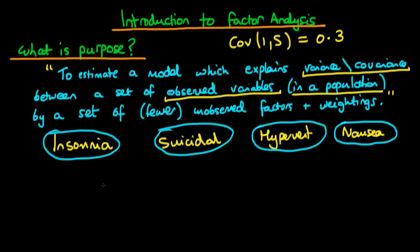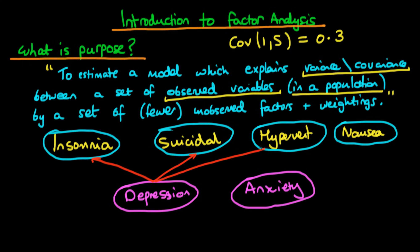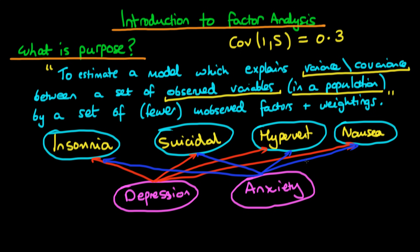The way in which factor analysis works is that we suppose that the variance and covariance structure in our observed characteristics is due, at least in part, to some unobserved factors. The unobserved factors here might be whether an individual is depressed and whether that individual is experiencing some form of extreme anxiety. We suppose that these two underlying factors are responsible for the variance and covariance between all of these variables, meaning that depression and anxiety actually cause the variance and covariance between all of these observed characteristics.